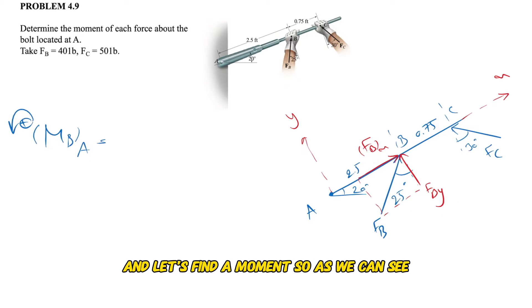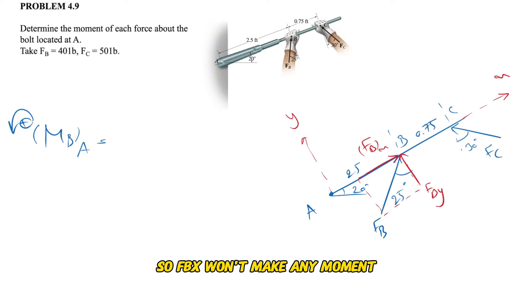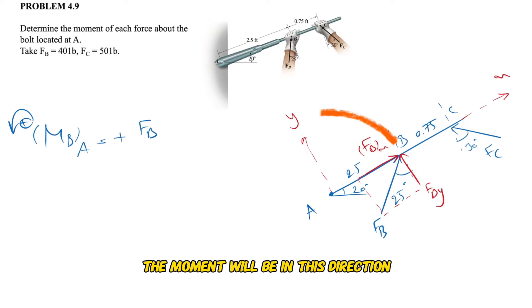Let's find the moment. As we can see, the Fbx component won't make any moment because it's along the distance vector from A to B. So Fbx won't make any moment, but Fby is going to make a moment. If we look at it, the moment will be in this direction which is counterclockwise.